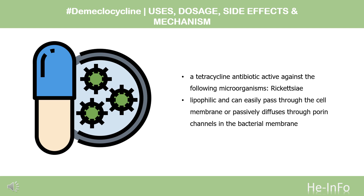D-meclocycline inhibits cell growth by inhibiting translation. It is lipophilic and can easily pass through the cell membrane or passively diffuse through porin channels in the bacterial membrane. D-meclocycline is not a direct bactericidal agent; rather, it is a bacteriostatic drug that impairs bacterial growth. Because it is excreted more slowly than tetracycline, it maintains effective blood levels for longer periods of time.